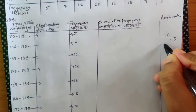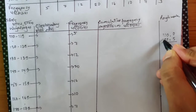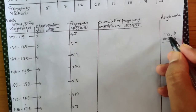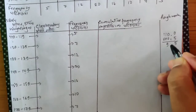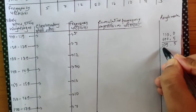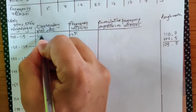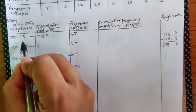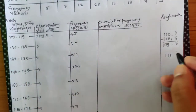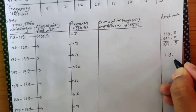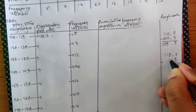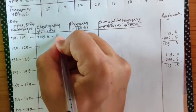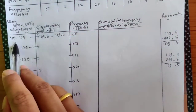Always remember: points should be in the same line. Borrow one — ten minus five is five; this has become nine; this one has been borrowed, so it's not nine. So the lower limit becomes 109.5. For the upper limit, add 0.5 to 119. The point is here and you're adding 0.5. This is how the inclusive interval is converted into an exclusive interval.